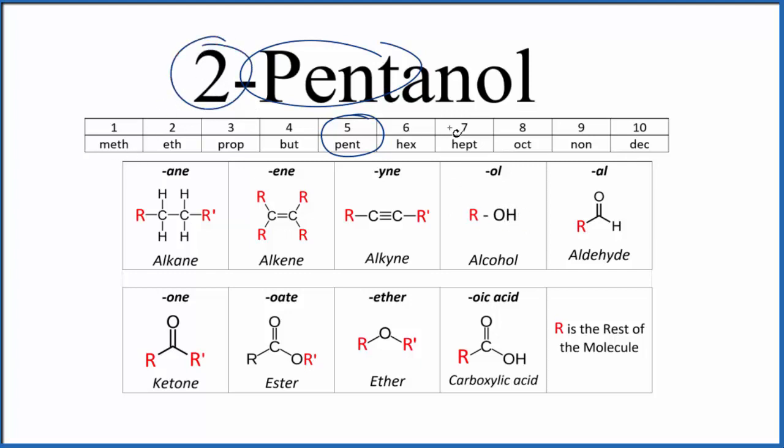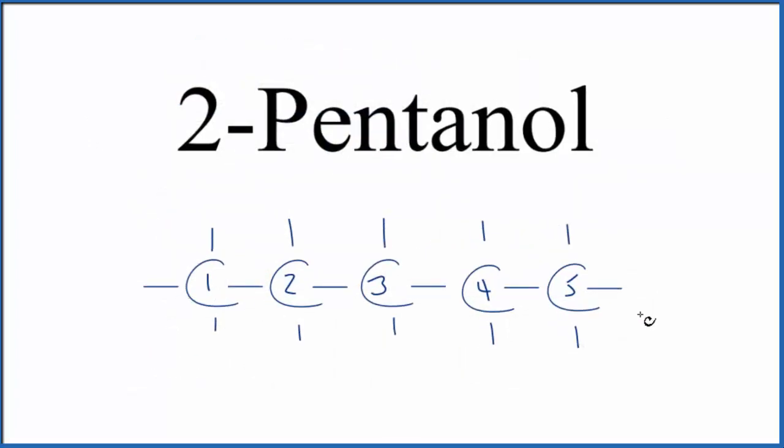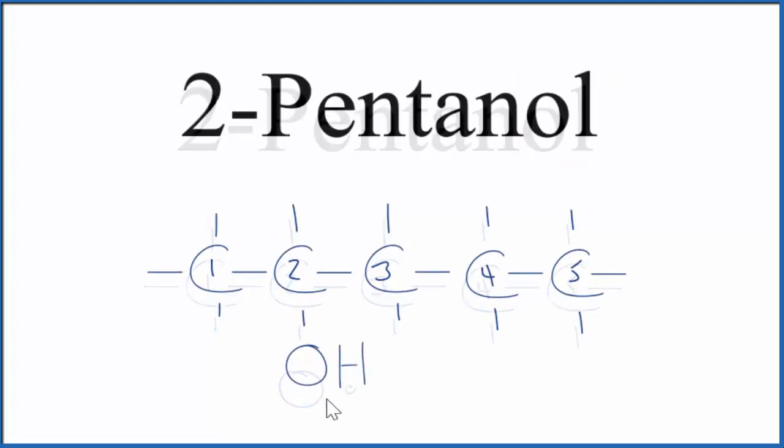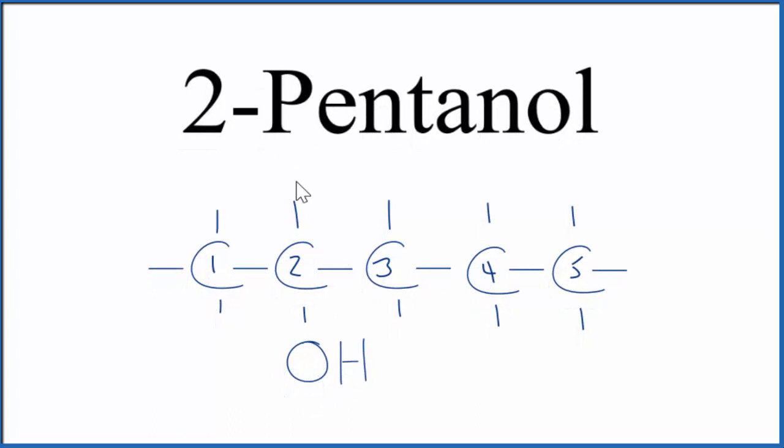So let's put a chain of five carbons up and then number them. So we have our five carbons, we have all single bonds, and on the second carbon, we're going to put that OH group because it's an alcohol and it's -ol. Let's put it down here, although we could have put it on the top. It really doesn't matter.